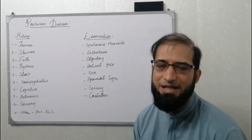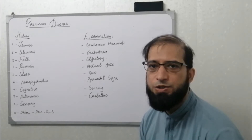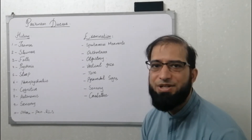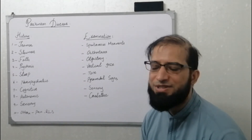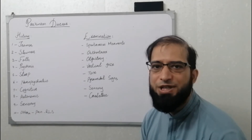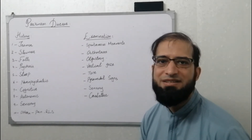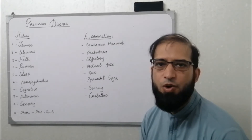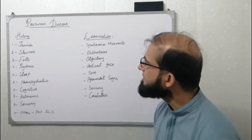In neurology, history is a key component — based on that foundation you do your examination. There are different types of Parkinson's disease. It is easy to say a patient has Parkinsonism, but to determine whether it is typical, atypical, or associated with another disorder like vascular Parkinson's disease from lacunar strokes is more complex.